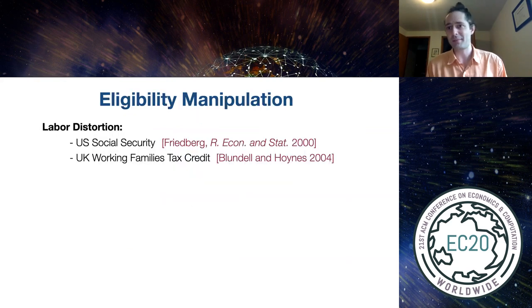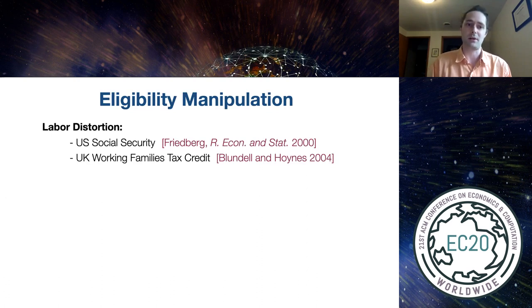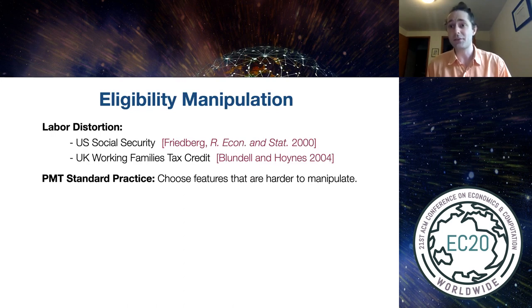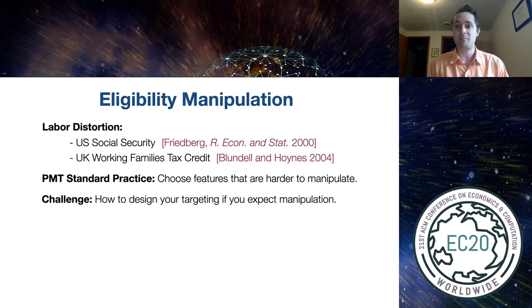This isn't just something that happens for SSDI — this happens in lots of other social programs. There's evidence of labor distortion around the income cutoffs in lots of other social programs: U.S. Social Security, and there's a paper that talks about a program in the UK. In PMTs as well, there's concern over manipulation. It's standard practice to try to choose features that are hard to manipulate, specifically for this fear. So I want to talk about how you should design your targeting procedure if you expect the possible recipients to manipulate.